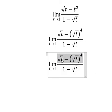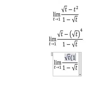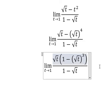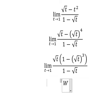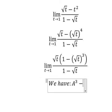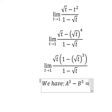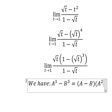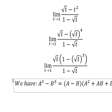Next, we have the formula here: a³ - b³ = (a - b) multiplied by a² + ab + b².